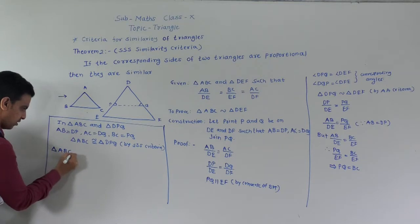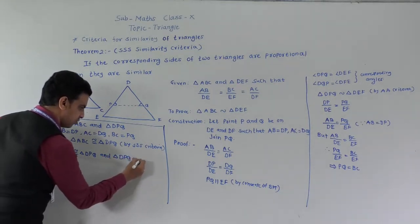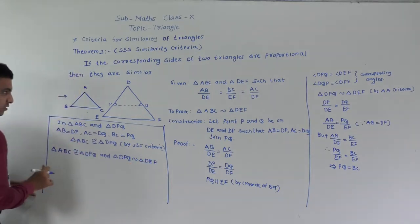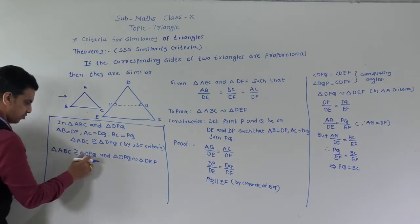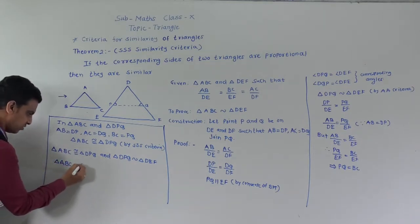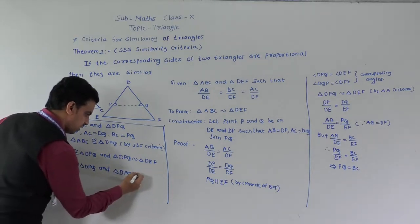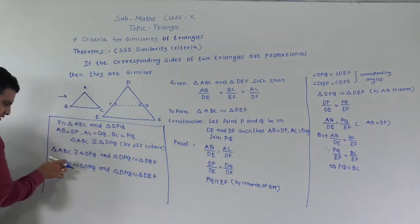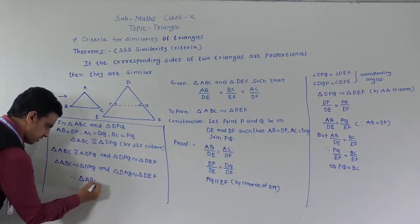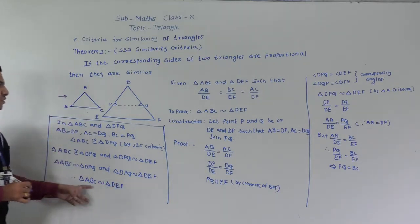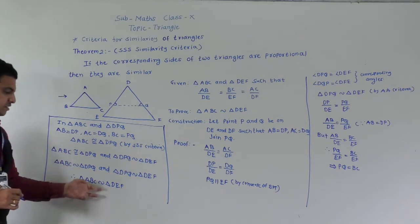Triangle ABC is congruent to triangle DPQ and triangle DPQ is similar to triangle DEF. Therefore triangle ABC is similar to triangle DEF. This proves that if corresponding sides of two triangles are proportional, then the triangles are similar. Now we will see the next theorem: SAS Similarity Criteria.